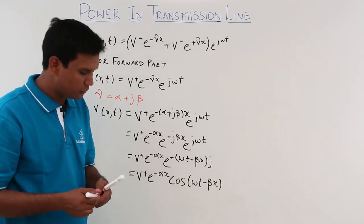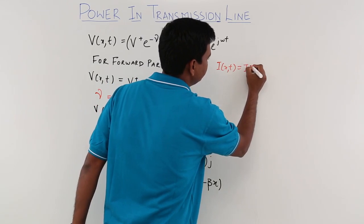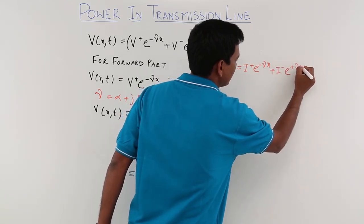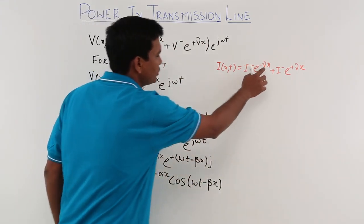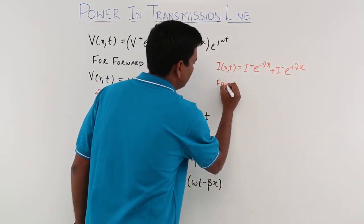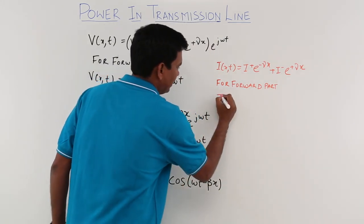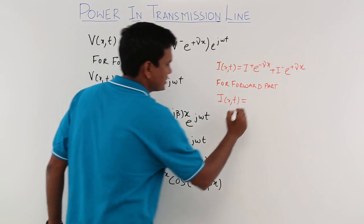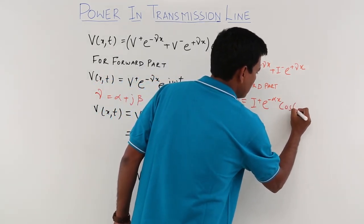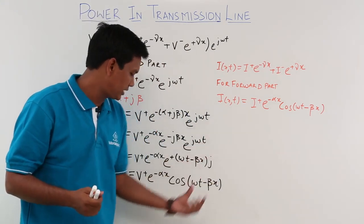The same derivation applies for the current. The current equation is i(x,t) = I+ e^(-γx) + I- e^(+γx). Substituting γ = α + jβ and taking the forward part, the forward current comes out to be i(x,t) = I+ e^(-αx) cos(ωt - βx). So we have both the voltage part and the current part.